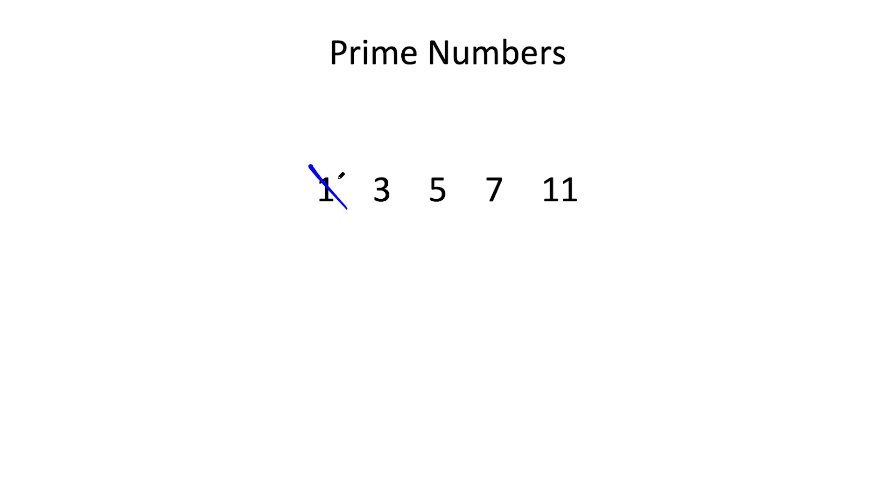And 1 is not a prime number. The reason is that 1 equals 1 times 1. So this is the only way to factor 1. That means the only factor of 1 is 1. But for a number to be prime, it has to have exactly two factors.